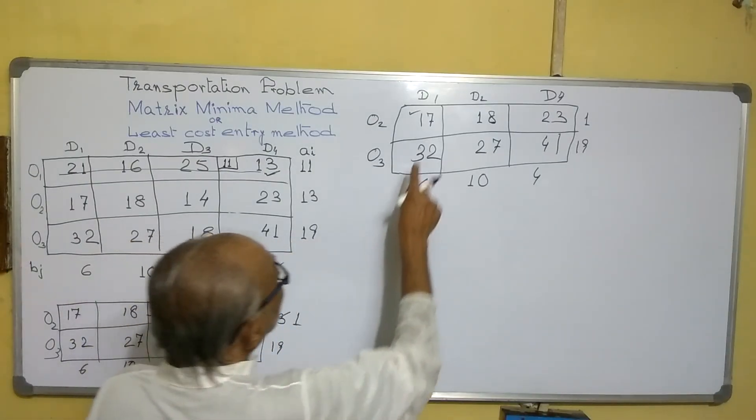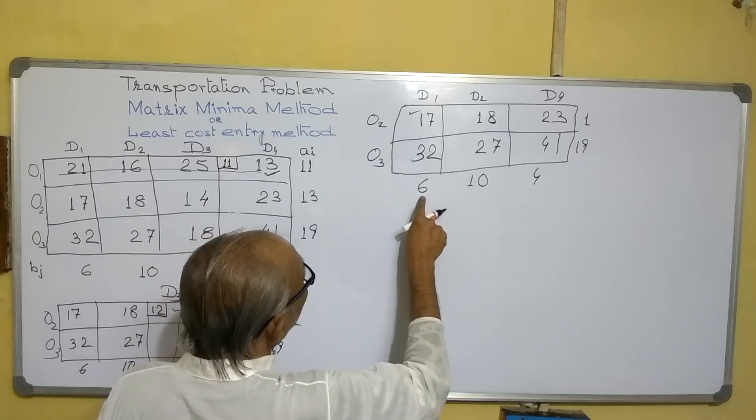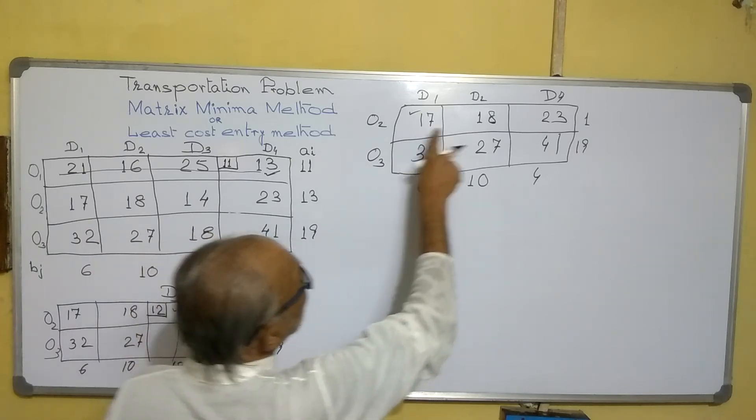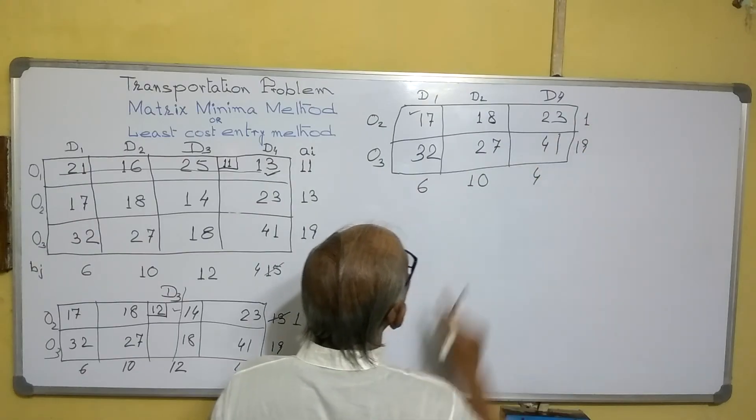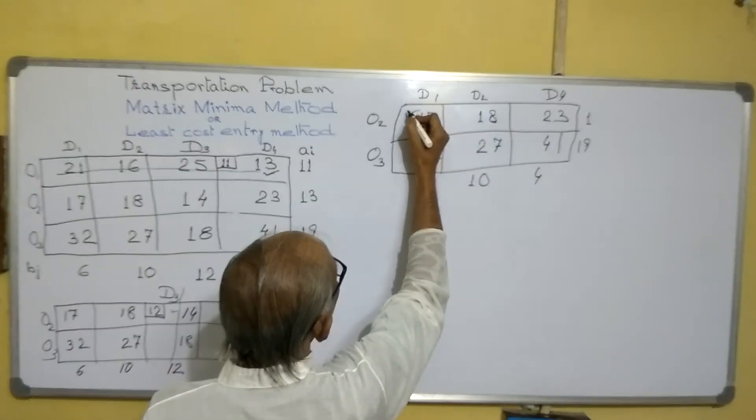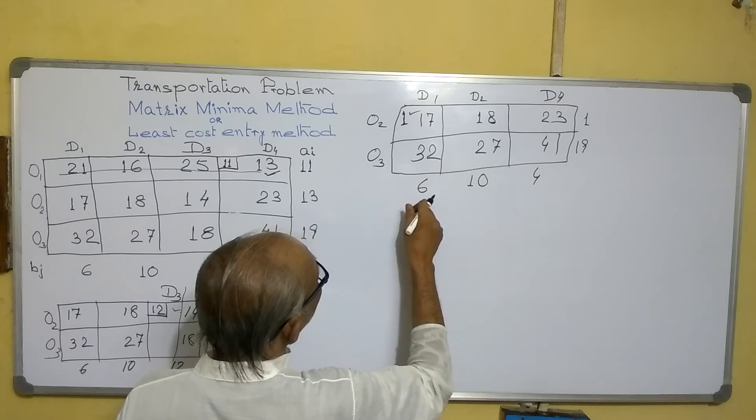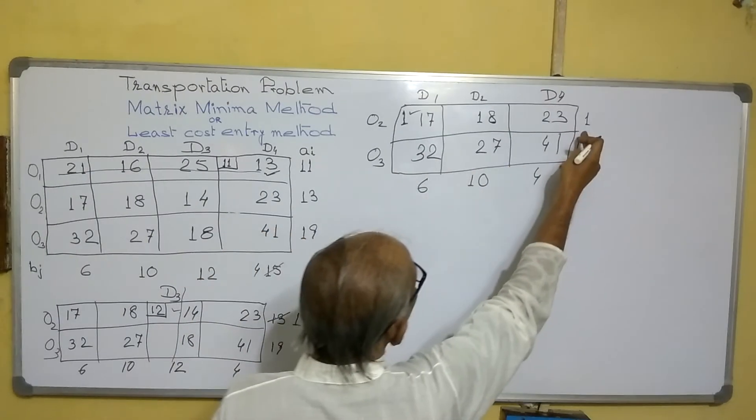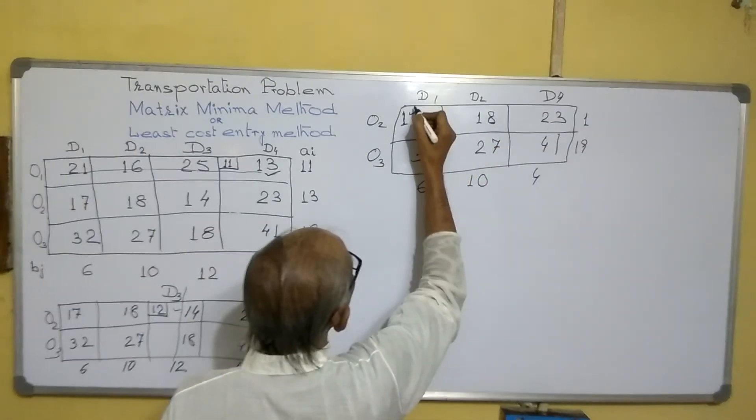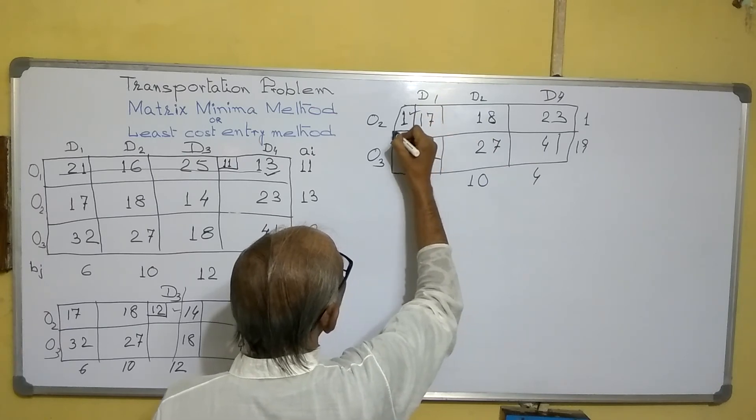So here requirement is 6, but available is only 1. So we will supply 1 there. Though 6 requirement is there, we have the capacity to supply only 1. So we will supply 1.